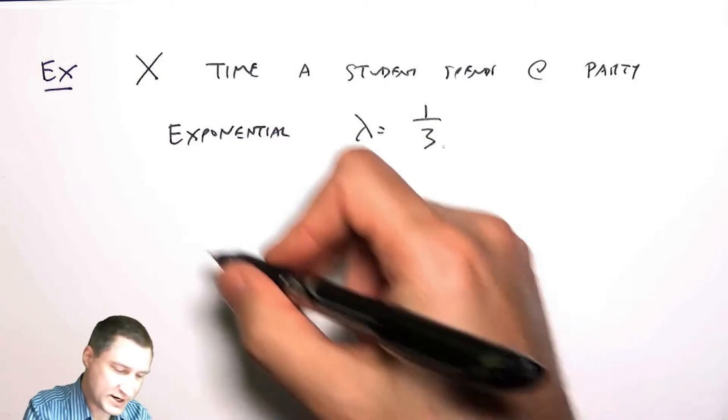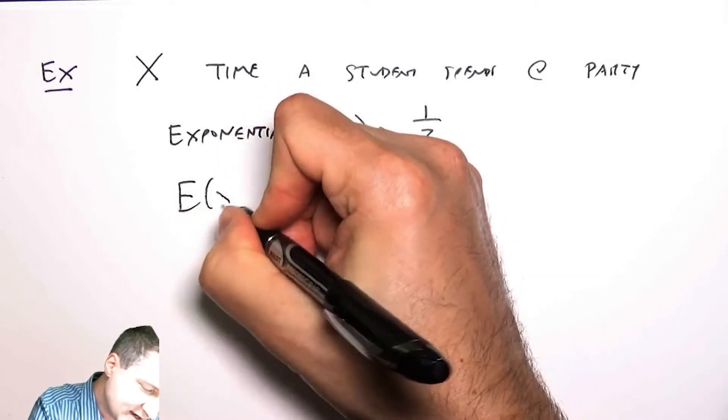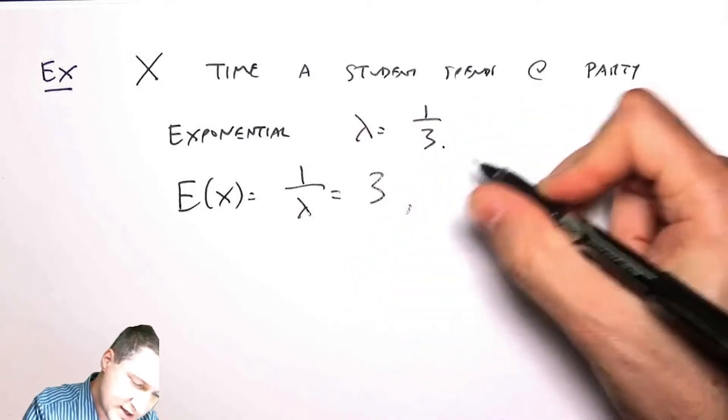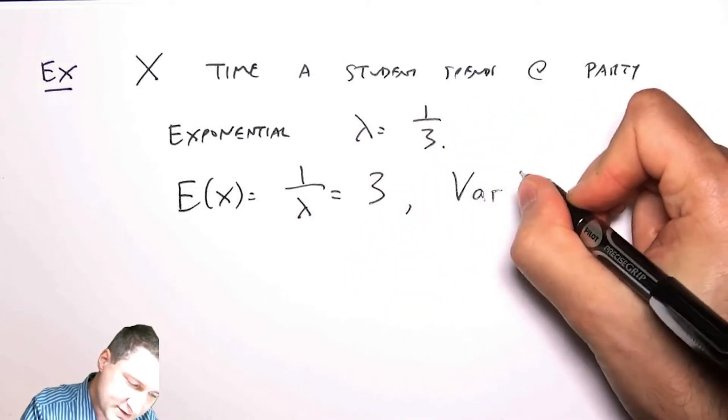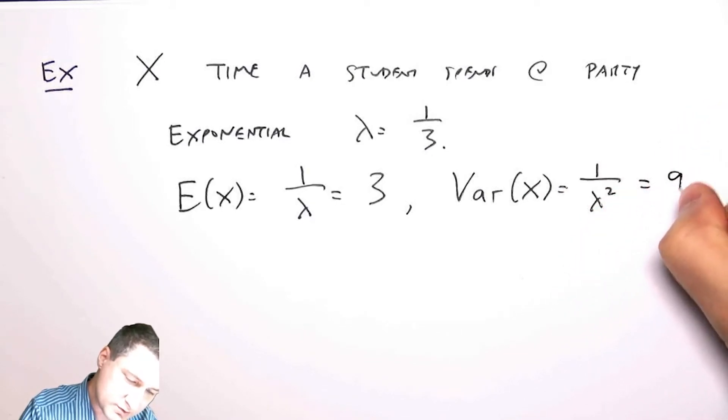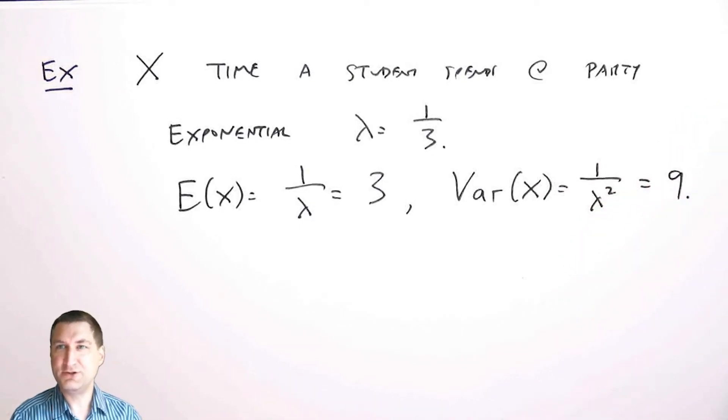We discovered last time via direct integration that the expected value of X was one over lambda which is 3, and we also derived that the variance of X was one over lambda squared which equals 9. In this case we're allowed to use these known values for E(X) and Var(X) and now we're going to compute some derived values.